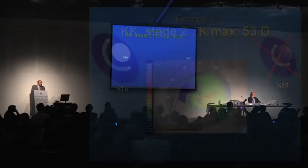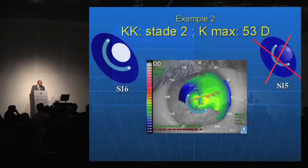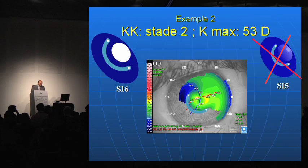The last example: keratoconus stage two, with irregular astigmatism where the ectasia does not reach the center. Here we need only peripheral flattening, so the ideal profile is SI6, and here is the post-op topography.